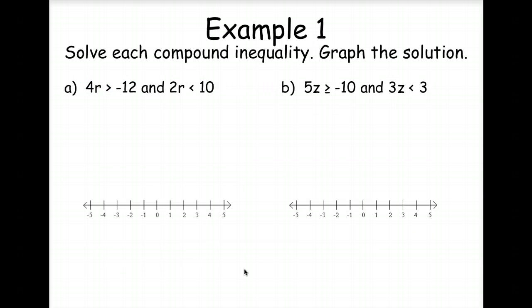So let's look at example one. First of all, we need to solve the compound inequality, and then we're going to graph the solution. Notice we have and, so this is going to make both of them true. We're going to solve this inequality by dividing both sides by 4 on this one and dividing both sides by 2 on the second one. So we end up with R is greater than negative 3. Since it's greater than negative 3, our arrow will go this way. And it's just greater than and less than, so we have an open circle. And R is less than 5. So what makes both of those true? The portion in between.